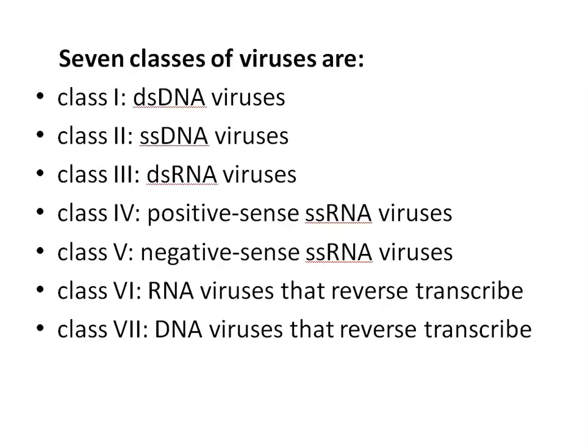So there are a total of seven classes of viruses. Class one: double-stranded DNA viruses. Then single-stranded DNA viruses. Double-stranded RNA viruses. Positive sense single-stranded RNA viruses. Negative sense single-stranded RNA viruses. RNA viruses that reverse transcribe, and DNA viruses that reverse transcribe.